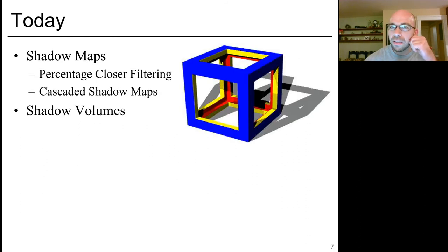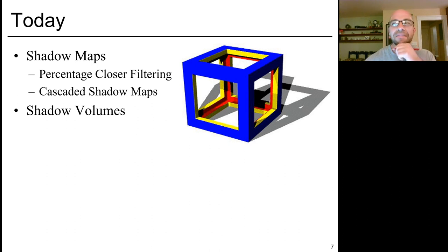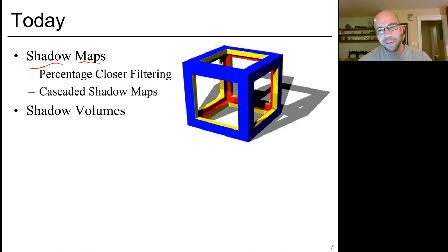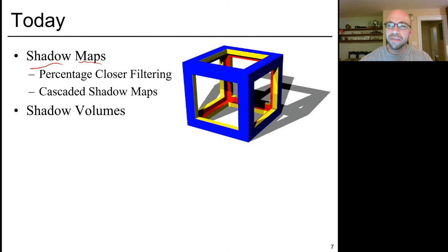Today we're going to talk about a few different strategies for adding shadows to rasterized scenes. The one you should really focus on is shadow mapping — that's probably the most common technique in the video game universe, and it's the one you'll implement in your homework. We'll also talk about strategies like percentage closer filtering and cascaded shadow maps, whose job is to reduce the amount of aliasing in the basic shadow map algorithm.